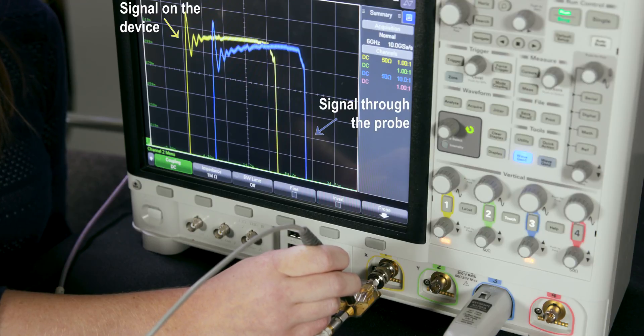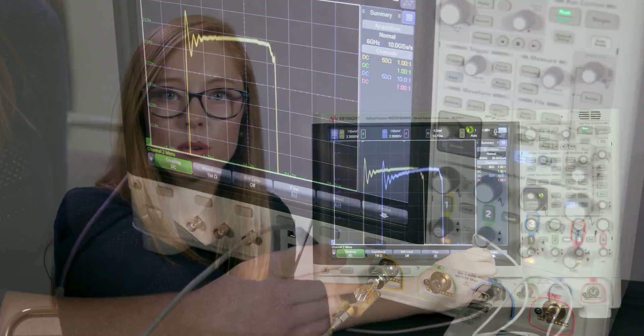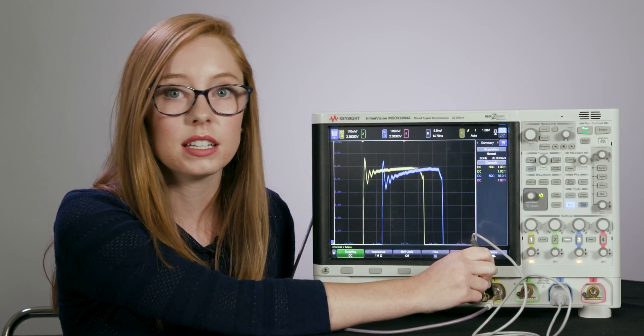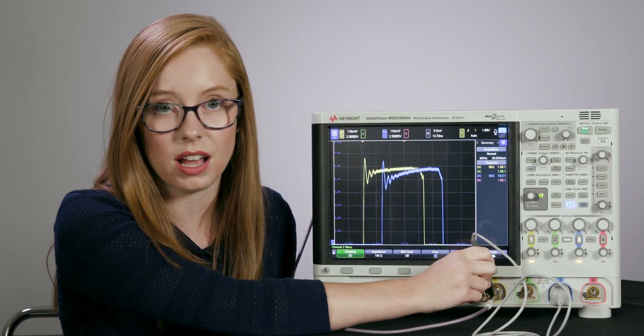And second, we can see that the blue trace looks almost identical to the yellow trace, which means that the signal you're seeing on screen is a true representation of the signal as it exists on your device. So why is there such a difference between a passive probe and an active probe?